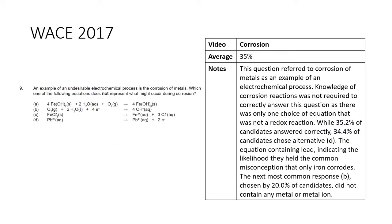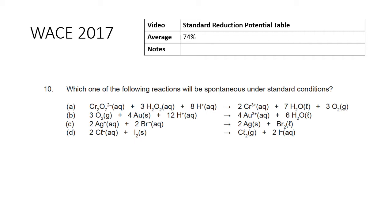Next: undesirable electrochemical processes — corrosion of metals. Which equation does not represent what might occur during corrosion? This was done poorly. The key insight is that only one choice was not a redox reaction — you could just pick that out. Many students chose D, implying only iron corrodes, but all metals can corrode. Corrosion is the oxidation of metals. The answer is C — it's the only one without a redox reaction occurring.